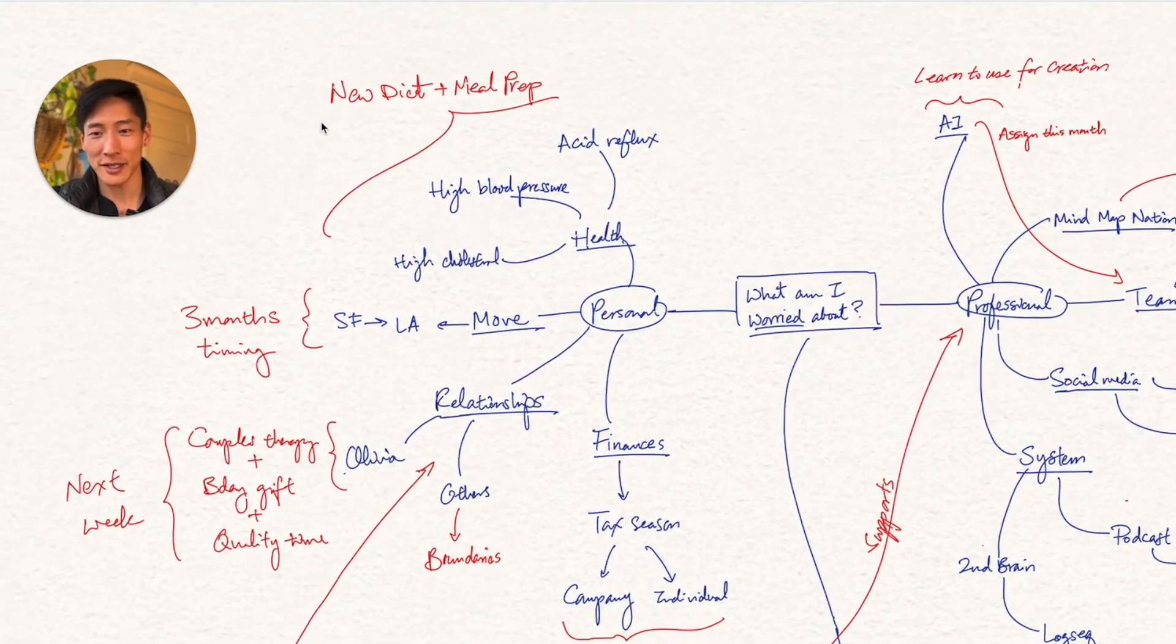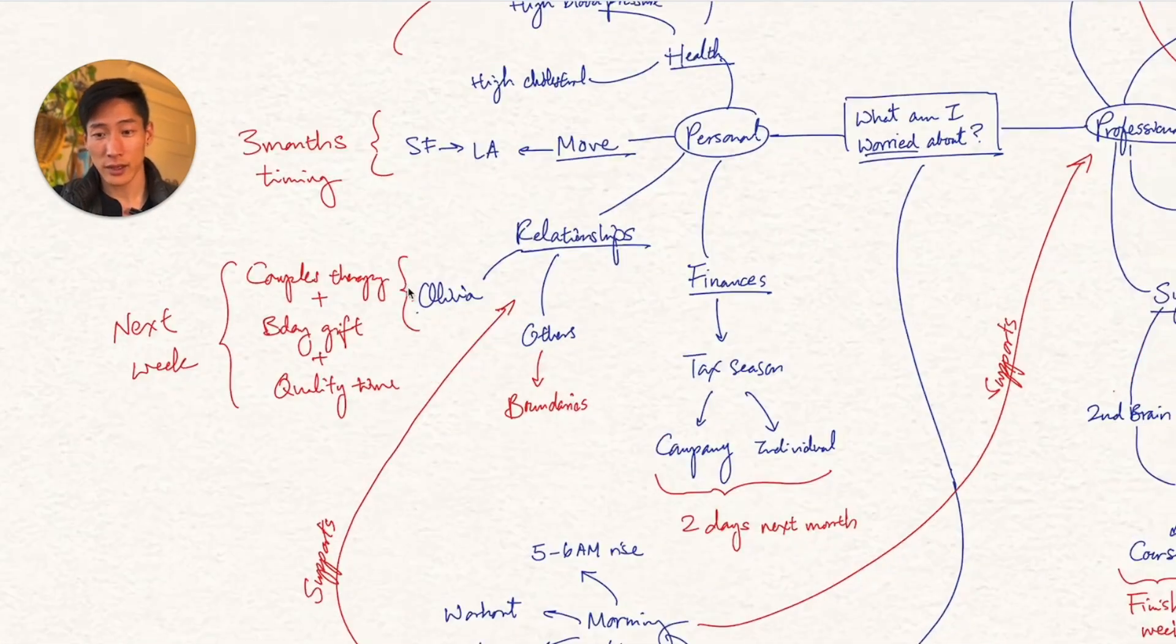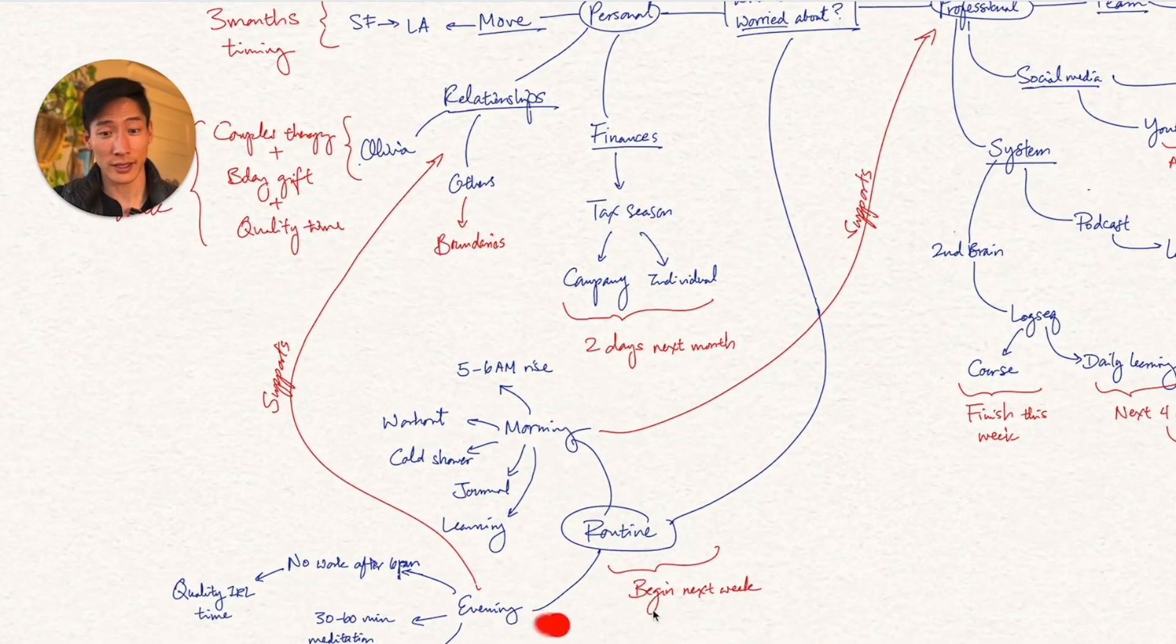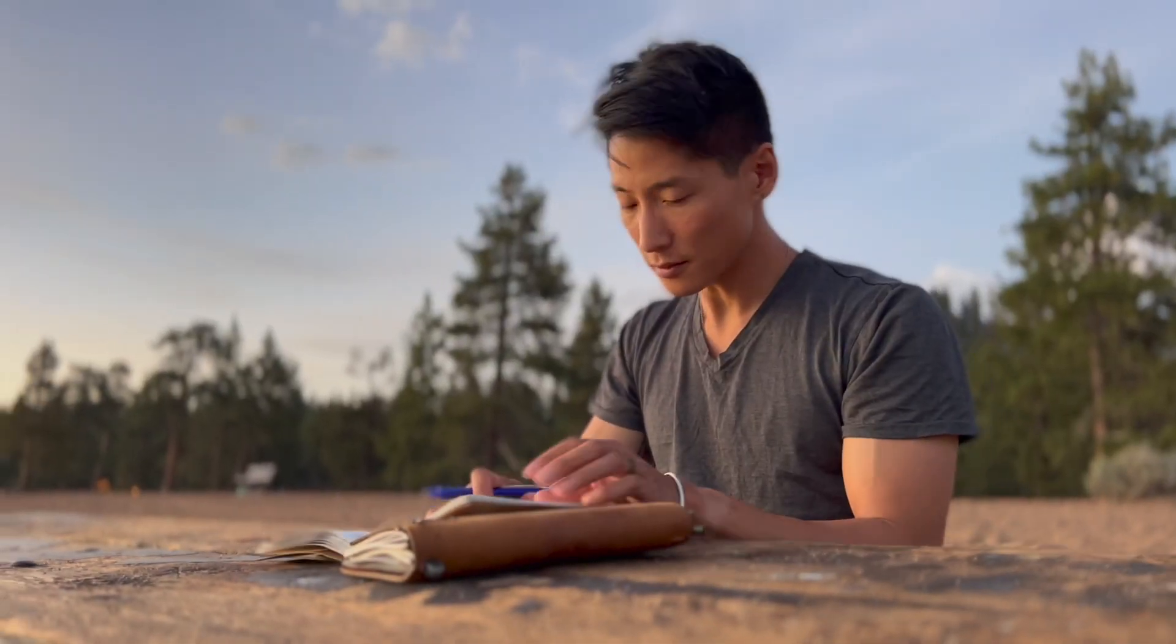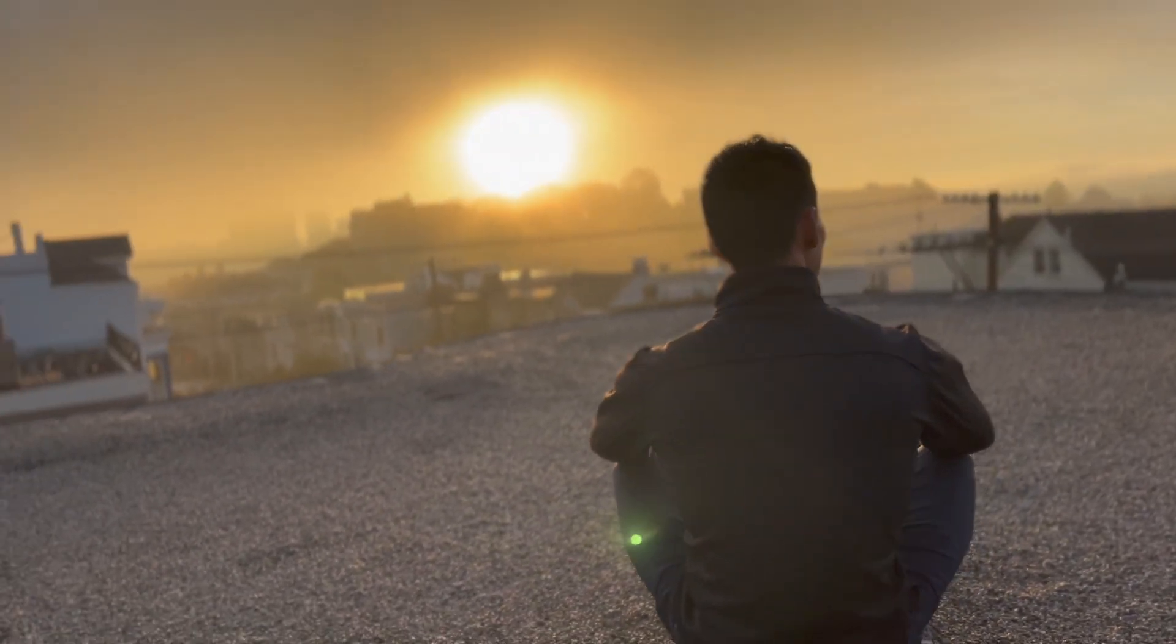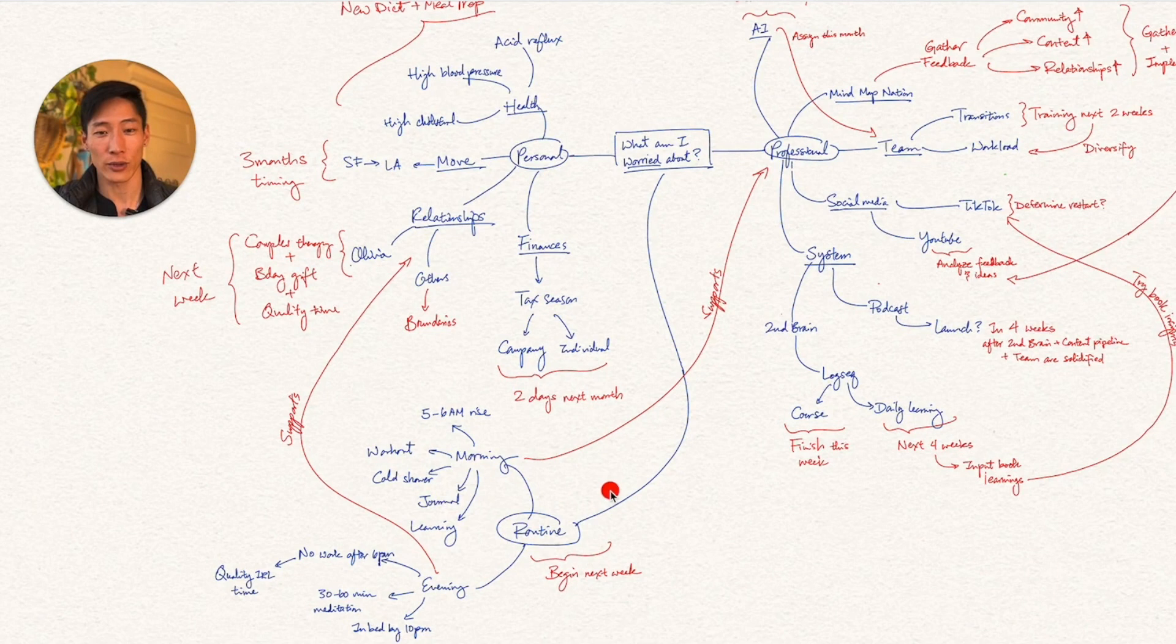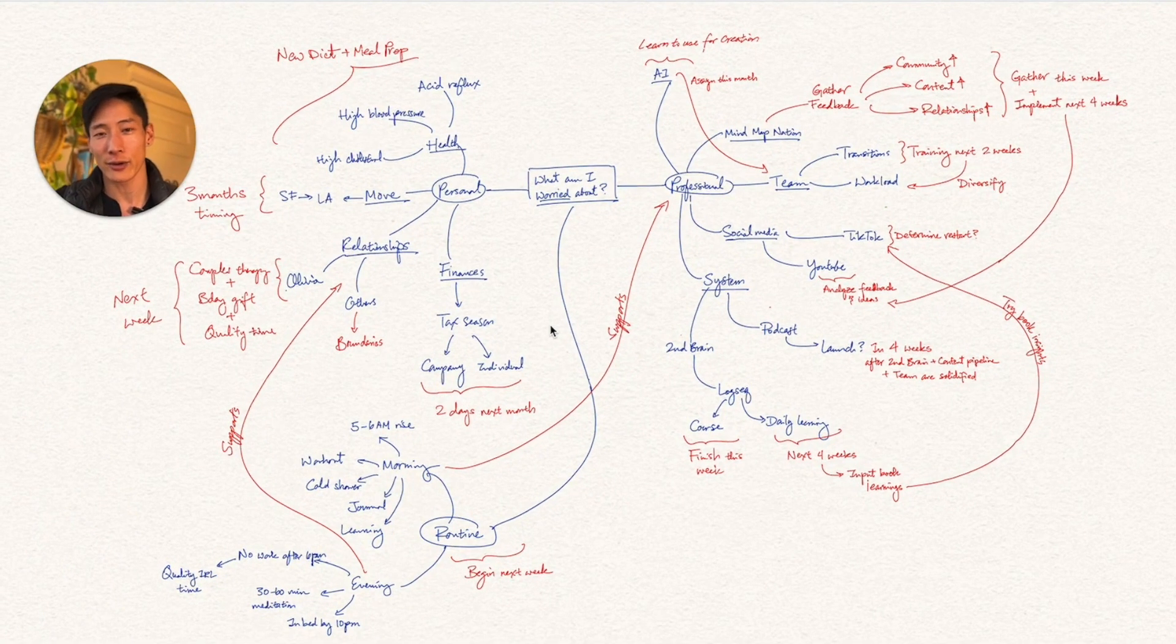On the personal side, health-wise, I'm going to be implementing the new Mediterranean diet as well as meal prepping. Move, as I mentioned, three months timing. On the relationship side, this coming week, I've got couples therapy. I'm going to complete the birthday gift for Olivia and then spend quality time that is enabled by good routines, which is also actually starting up at the same time. What I noticed about my routines is that my morning ritual, the 5 a.m. rise, workout, cold shower, and everything gives me such a big boost in terms of productivity. That actually really supports my professional endeavors. While my evening routine and rituals, which is no work after 6 p.m., that meditation and in bed by 10 p.m., really supports my relationships. So this is why routine actually deserved its own note or category to really pay attention to. At this point, I have a pretty solid game plan and time frame for addressing all the major areas of concern in my life. And that is the entire end-to-end process of mapping out our worries.